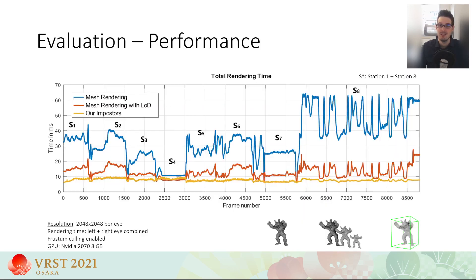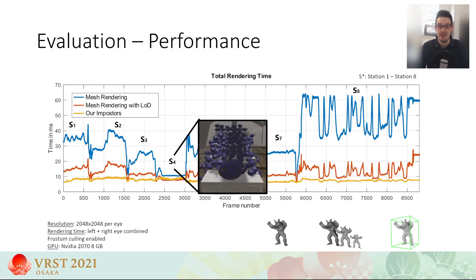In terms of performance, our approach is able to achieve a frame rate of over 90 Hz for this complex scene, which outperforms the naive mesh rendering condition by a factor of 3-6. If we include levels of detail, the performance of the mesh rendering condition improves significantly. However, our technique is still faster by a factor of 2-3. The only time where mesh rendering with LODs slightly outperformed our impostors was at station 4, where a large number of very simple objects is rendered.